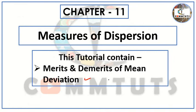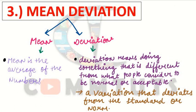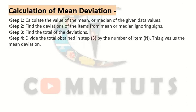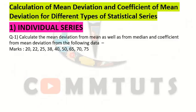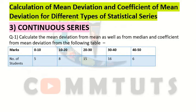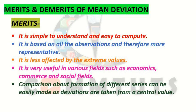So far we have understood what is mean deviation and how to calculate mean deviation under different statistical series. In the last tutorials we understood what mean deviation is and how we calculate it in all three types of series — individual series, discrete series, and continuous series. And today we will discuss what are the merits and what are the demerits, the advantages and disadvantages of the mean deviation method.